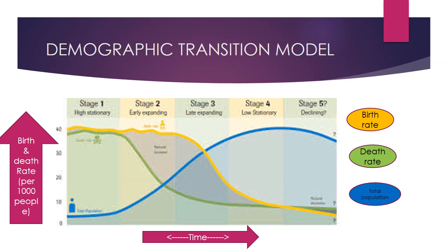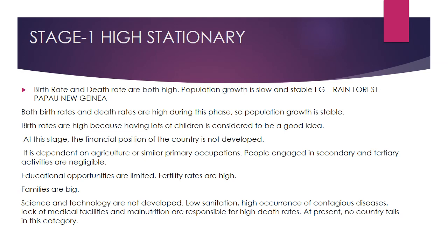Stage 1 is called the High Stationary stage. The main characteristic is that both birth rate and death rate are high. The number of people taking birth is also high and the number of people dying every day is also high. Because of this, there is very little growth in population — the population is basically stable. An example is the rainforest.